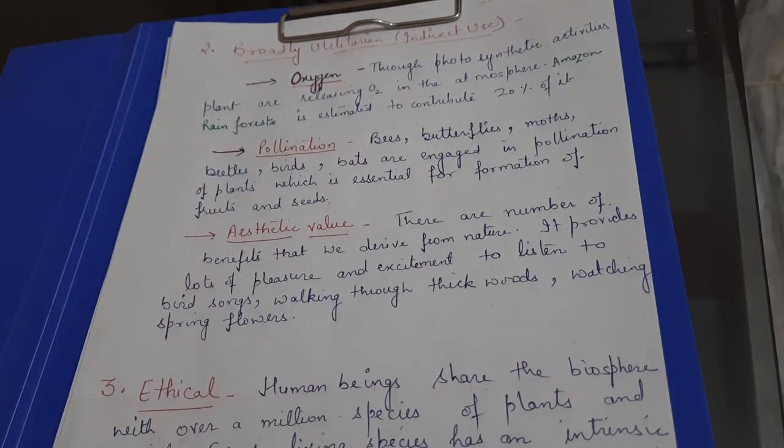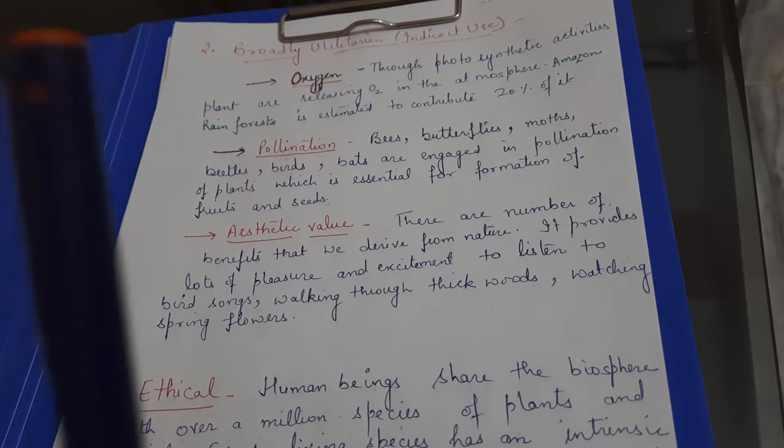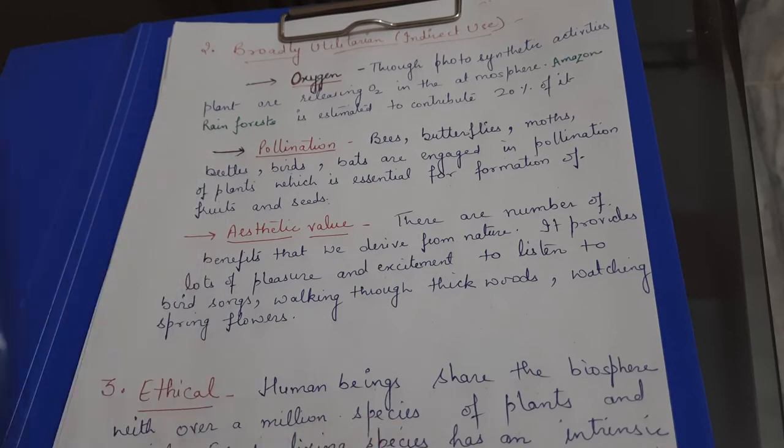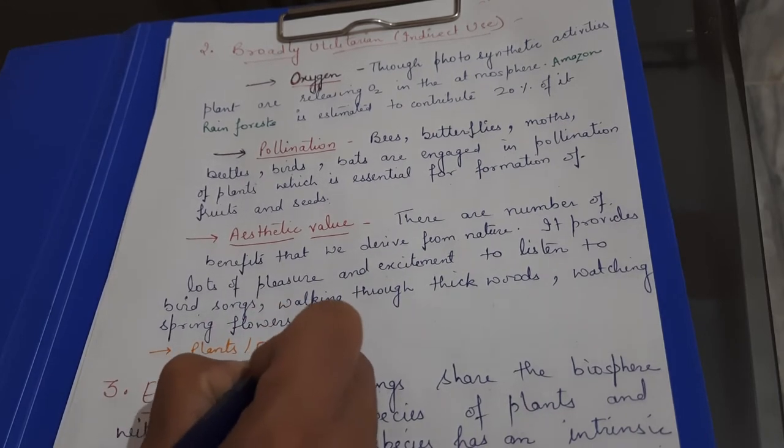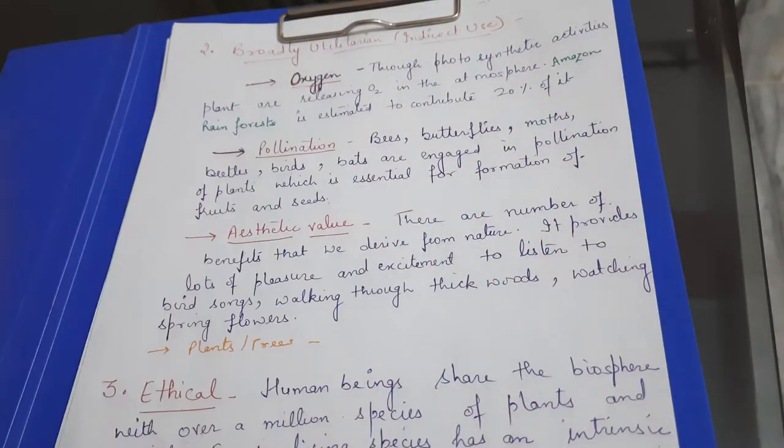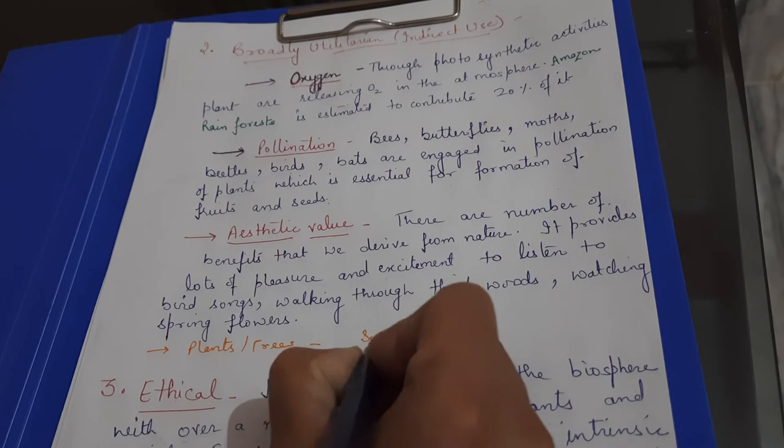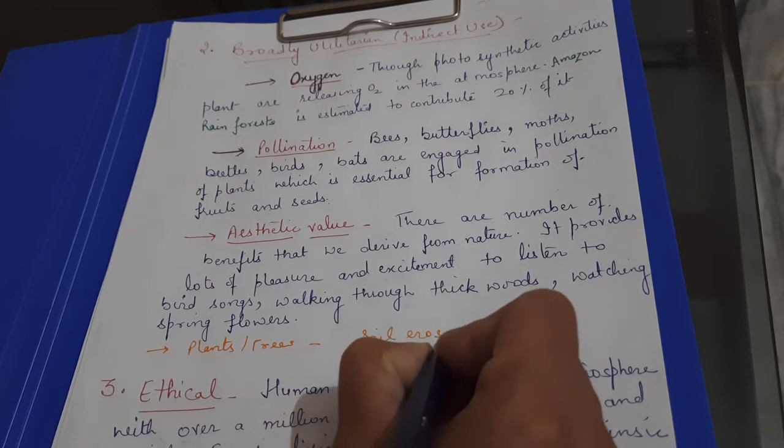So this is a broadly utilitarian category. There are other reasons for broadly utilitarian reasons. For example, there is another one. Let us suppose that the plants have a large number of soil and land areas covered. Plants and trees. We need to cover our soil with plants or trees. If we need to cover our soil, can be avoided.